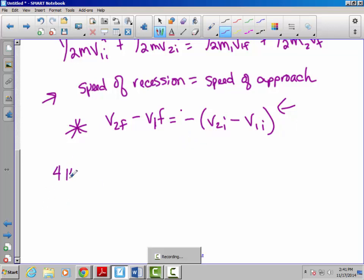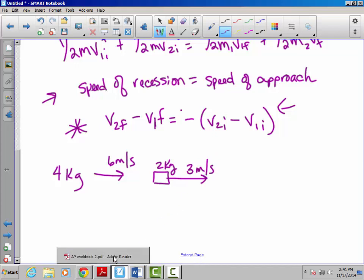Let's say we have a 4 kilogram block and it's moving to the right at 6 meters per second, and it's going to collide with a 2 kilogram block moving to the right at 3 meters per second. And I want to know what are their final velocities. Typically we would need to know a little bit more than this, we would need to know one of their final speeds, but because we have this relationship and we know that the difference between the final equals the negative of the difference between the initial, we can solve this pretty easily.